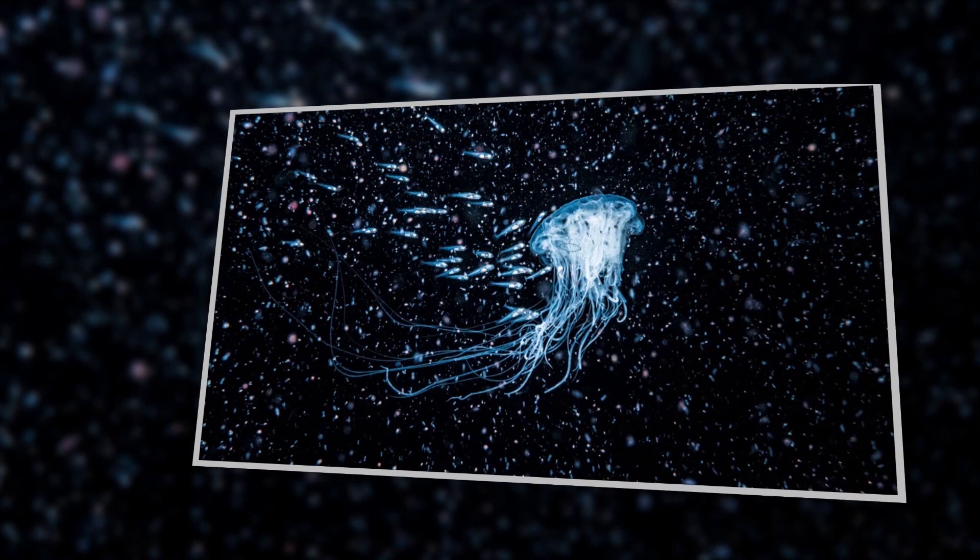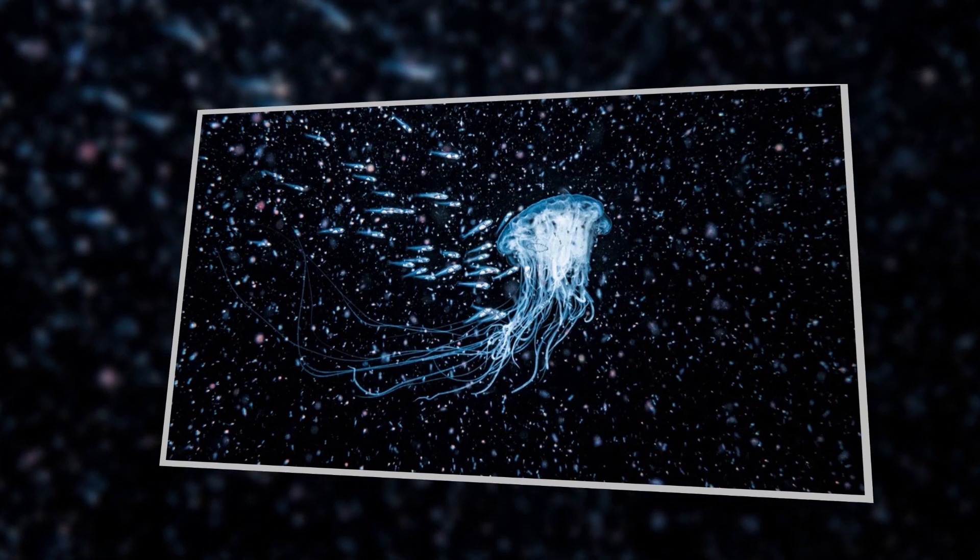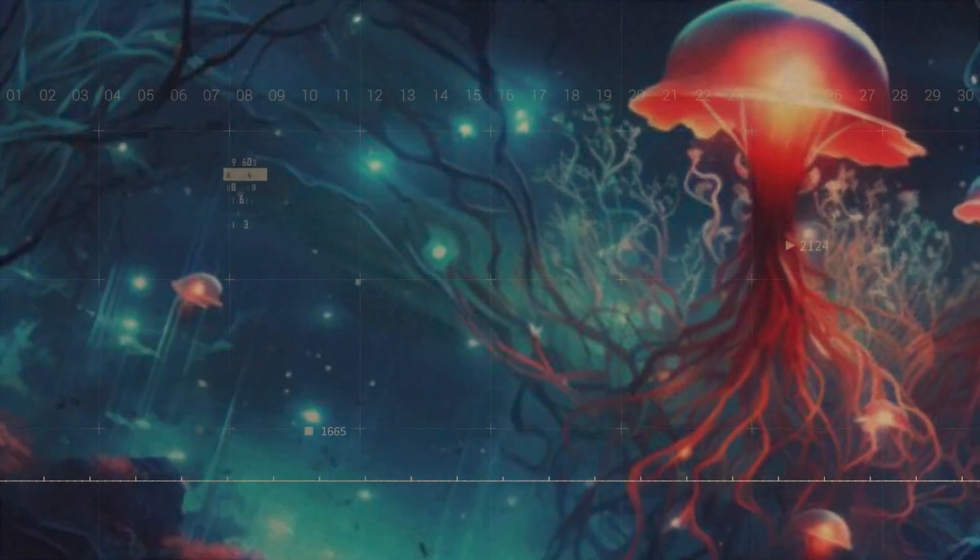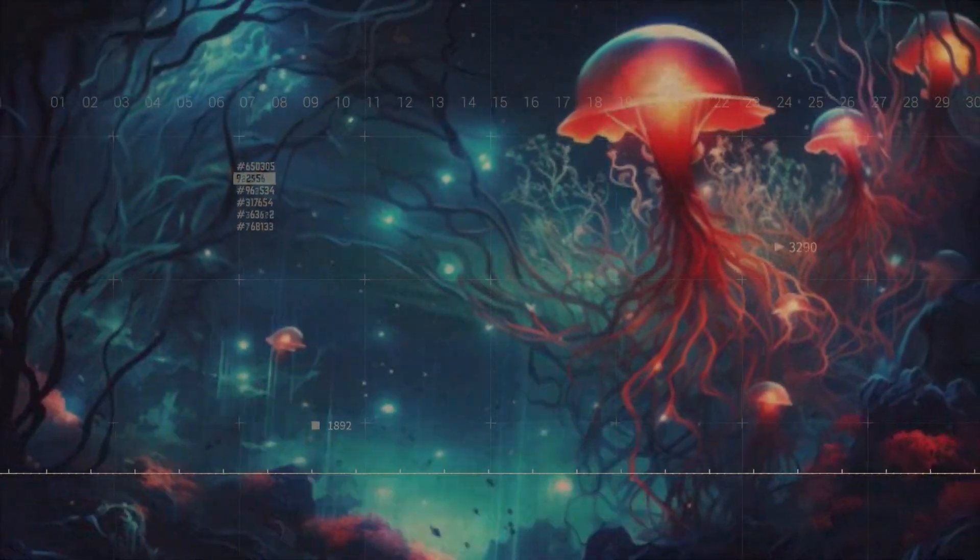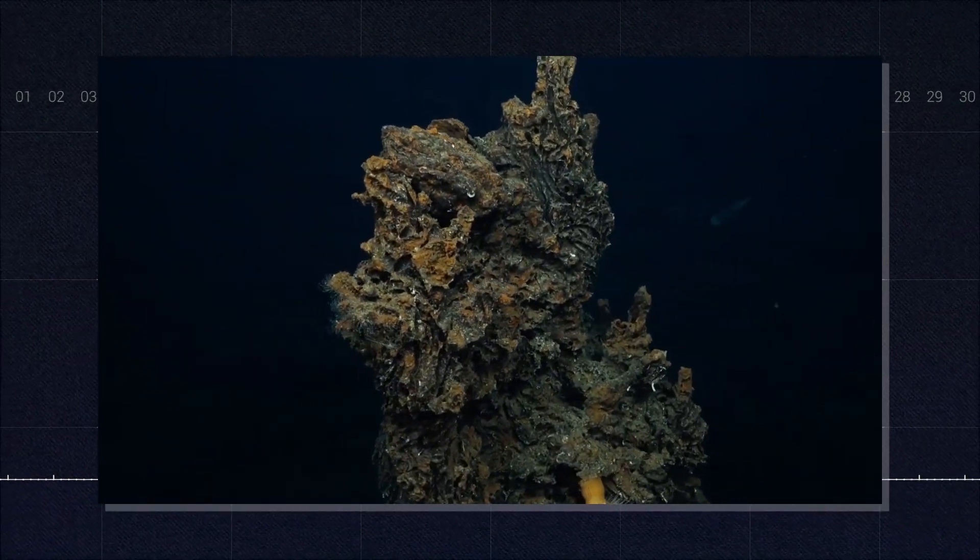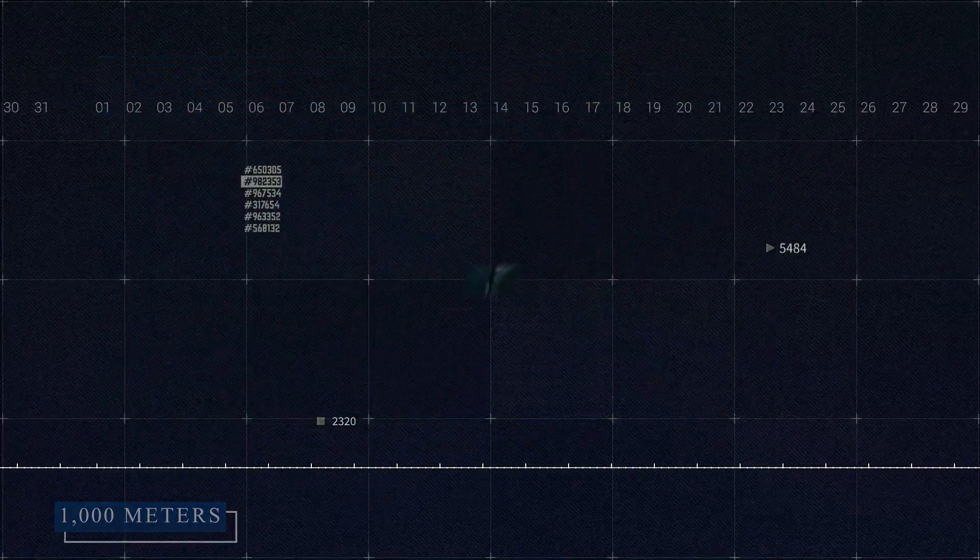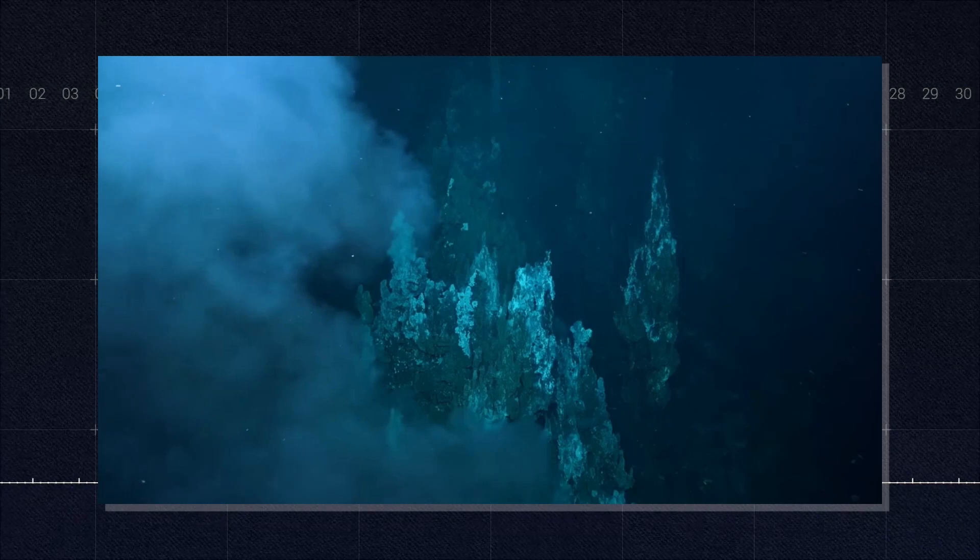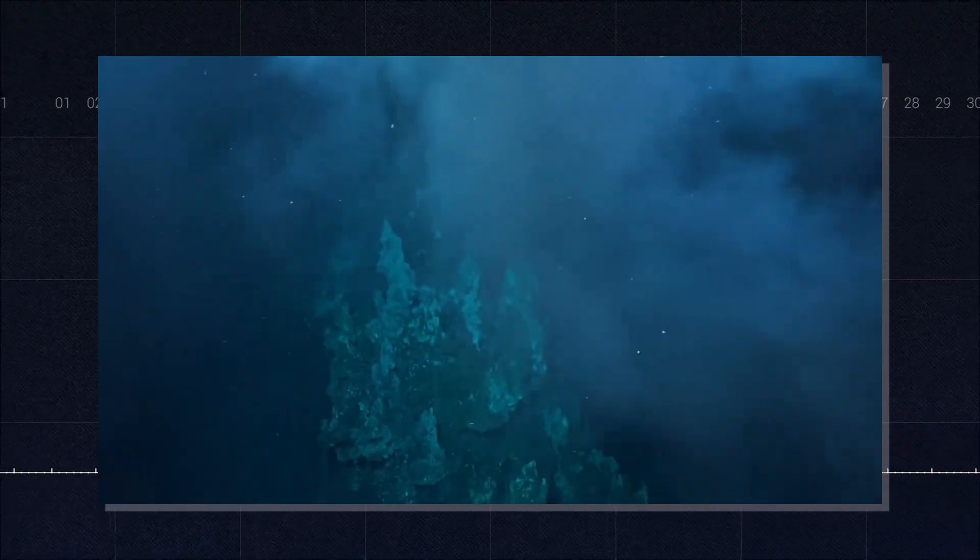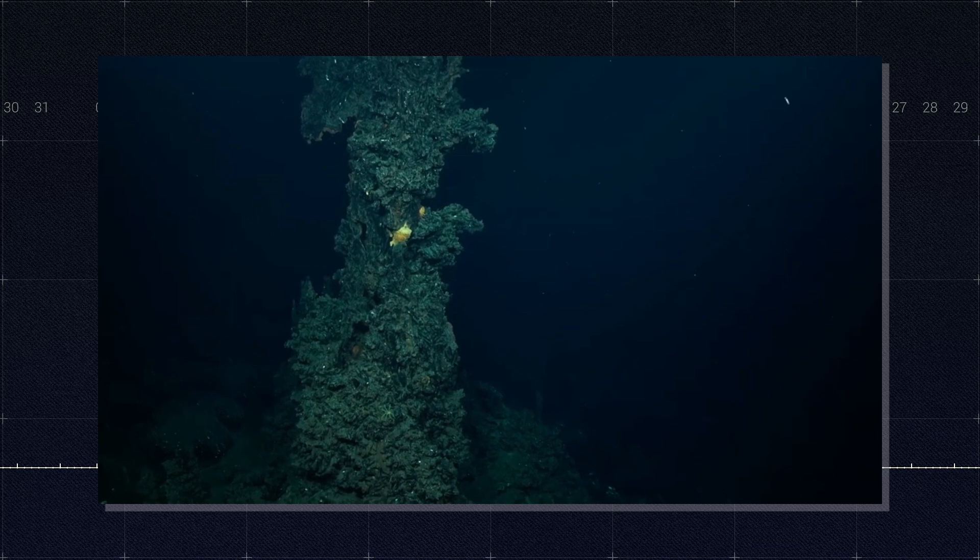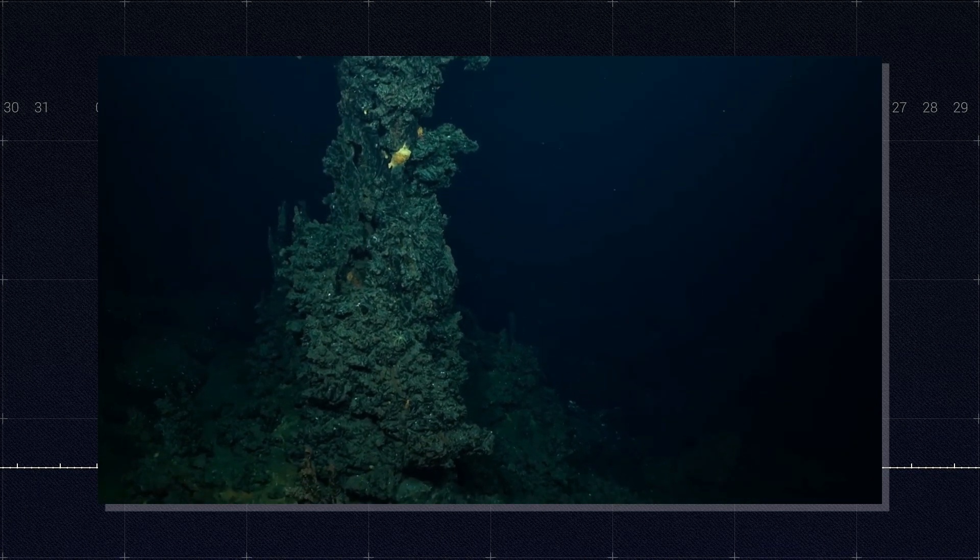The prevalence of bioluminescence in the deep sea is a testament to its evolutionary success. But why did this trait become so common in these dark depths? To understand this, we need to consider the unique challenges of life in the deep sea and how bioluminescence helps organisms overcome them. The deep sea is an environment defined by darkness. Below 1,000 meters, sunlight is all but absent, creating a world where visual communication and navigation are severely limited. In this environment, any ability to produce light provides a significant advantage.